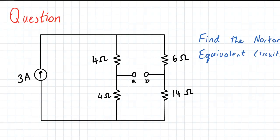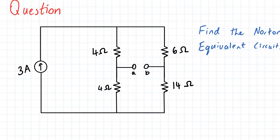So the question is asking us to find the Norton equivalent circuit for the following arrangement here. So we have a 3A independent current source, two 4 ohm resistors, a 6 ohm resistor, and a 14 ohm resistor.